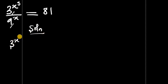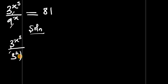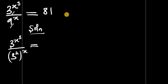So 3 to the power of x cubed, all divided by 9 — which is simply 3 to the power of 2 — all to the power of x, and this is equal to 81, which is simply equal to 3 to the power of 4.